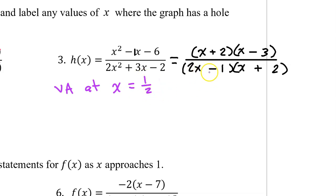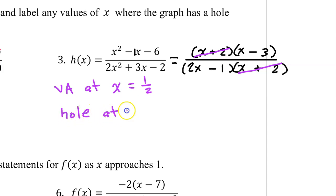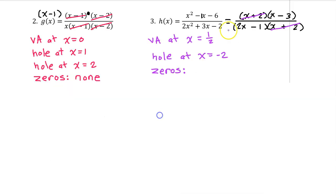That's what we get if we set this equal to 0 and solve. The x plus 2 in the denominator cancels out the x plus 2 in the numerator, so that means we have a hole at x equals negative 2. Also, because x minus 3 only appears in the numerator, h of x has a zero of positive 3.